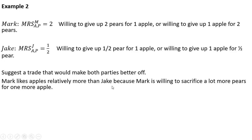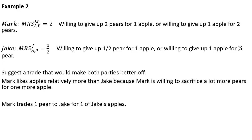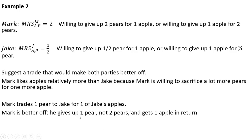In this example, Mark likes apples relatively more than Jake, because Mark is willing to sacrifice two pears for one more apple, while Jake is only willing to sacrifice half a pear for one more apple. So let's say Mark trades one pear to Jake for one of Jake's apples. Mark is better off: he gives up one pear, not two, to get an additional apple. His utility goes up.